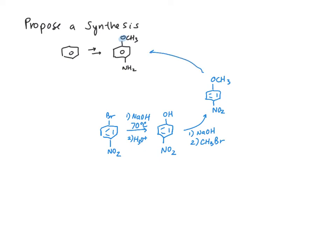For our final step, we want to do a reduction. We're going to use zinc hydrochloric acid followed by sodium hydroxide. How did we get to this bromonitrobenzene? We just brominate benzene and then use nitric acid with sulfuric acid to install the nitro group.